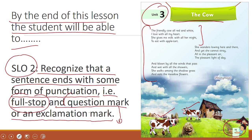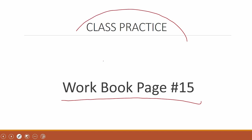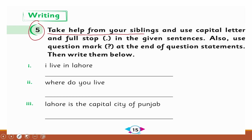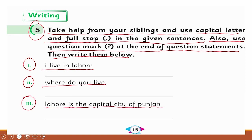Now it's time for the workbook, page number 15, as a class practice. Question 5: take help from your siblings and use capital letters and full stops in the given sentences, also use a question mark at the end of a question. Then write them below. Number 1: 'i live in lahore.' Number 2: 'where do you live?' Number 3: 'lahore is the capital city of punjab.'